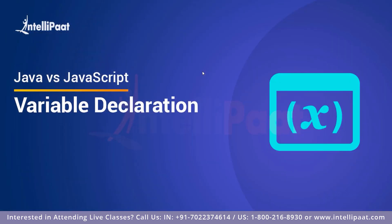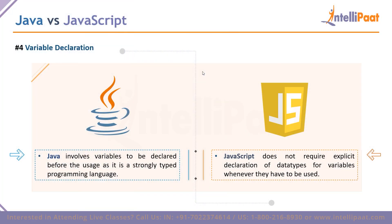Coming to the next point — variable declaration. Java is a strongly typed programming language, meaning variables have to be declared before you use them. You have to explicitly mention the type of variable you're going to use. JavaScript, on the other hand, is a weakly typed programming language, where you do not have to specify the types of data you use when storing something in a data entity. This is another huge difference: Java is strongly typed and JavaScript is weakly typed.